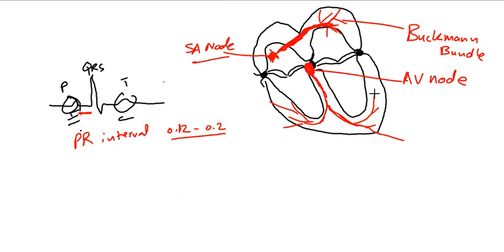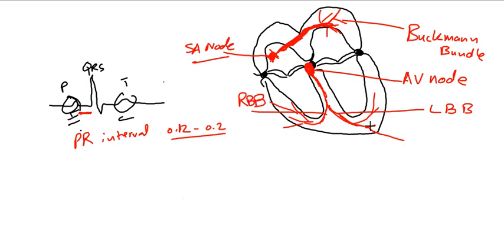The AV node — I personally call it the policeman or checkpoint of the conduction system; we'll learn why later. Then we have the left bundle branch, right bundle branch, and Purkinje fibers. Purkinje fibers are the fastest in the conduction system.